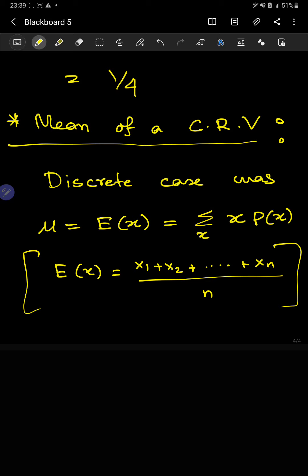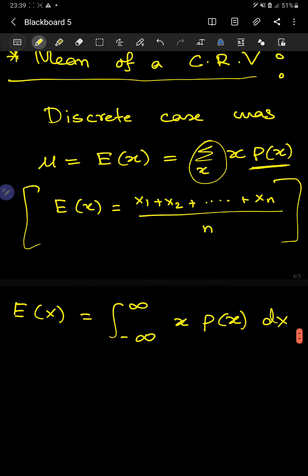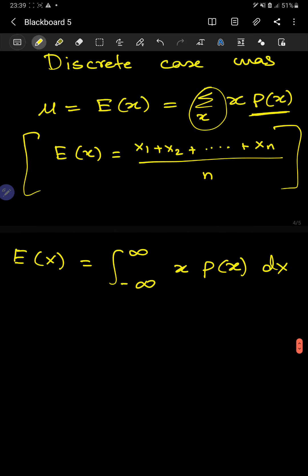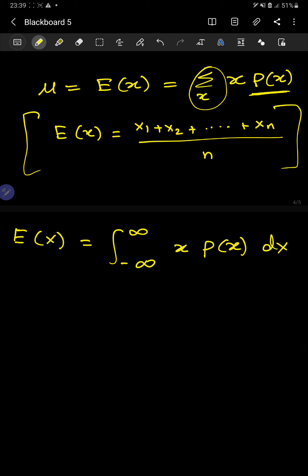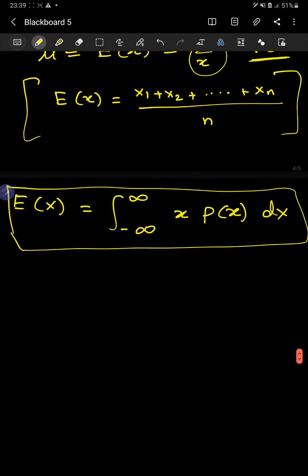In the continuous case, the summation is replaced by integration: the mean is the integral of x times ρ(x) dx. Here we assume x takes all real values, from minus infinity to infinity. But if x is within 0 to infinity, then the limits should be changed accordingly — if it's non-negative, you have to change the integration limits.